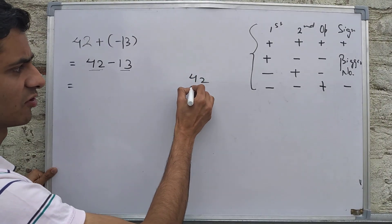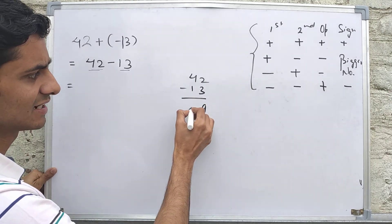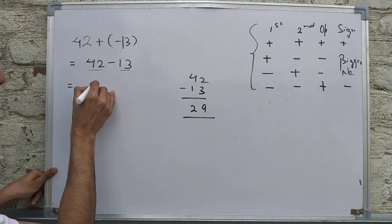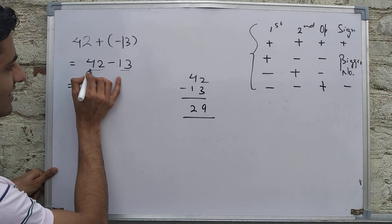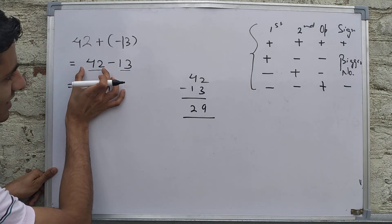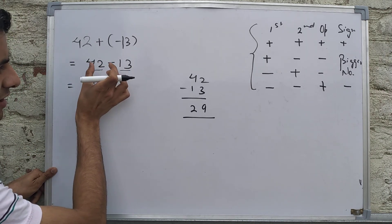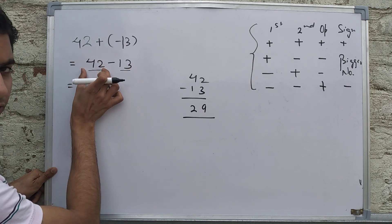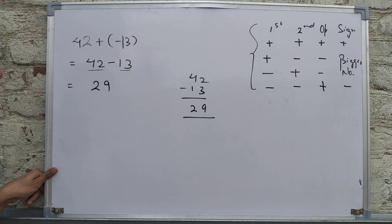We subtract: 42 - 13 = 29. Now for the sign, compare the absolute values — 42 and 13. Which is bigger? Obviously 42. What is the sign of 42? Positive. So the answer is +29.